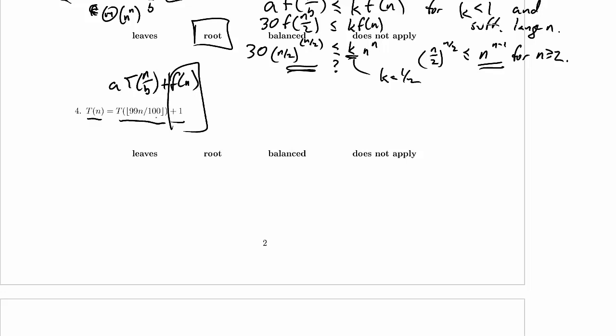So we just need to work on the aT(n/b). I don't see an a, but you know, T(99n/100), that's just 1 times T(99n/100), so our a is 1. What about b, is this n over b? Well we have n over 100 here, but what do we do with this 99?